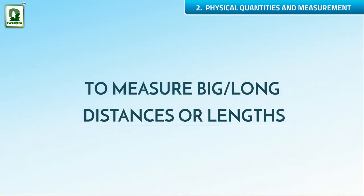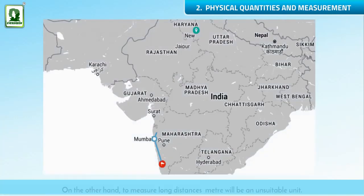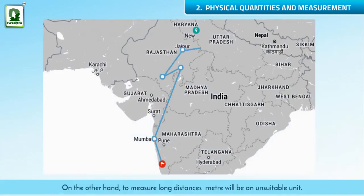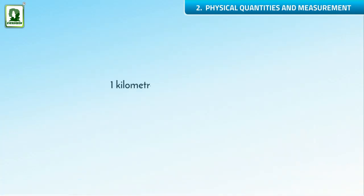To measure big or long distances or lengths, on the other hand, the meter will be an unsuitable unit. Hence, a large unit of length is needed. This unit is called the kilometer. 1 kilometer (km) is equal to 1000 meters (m).